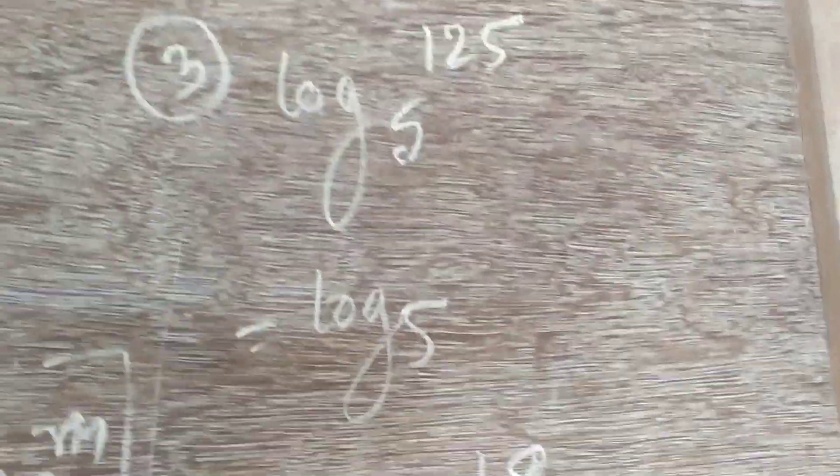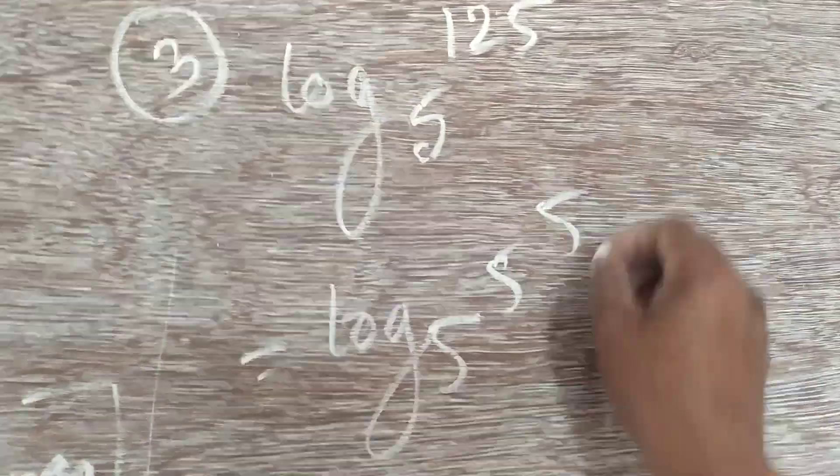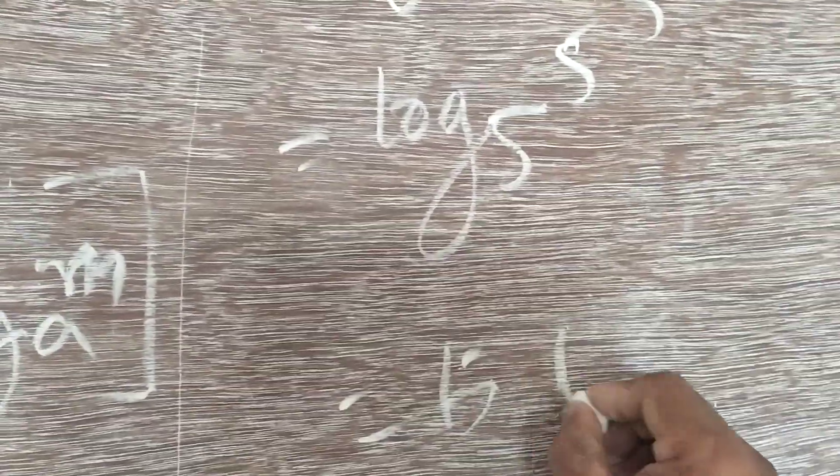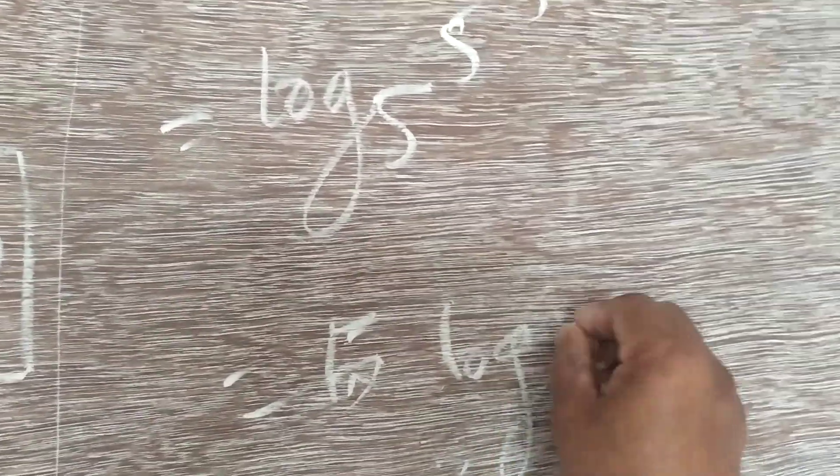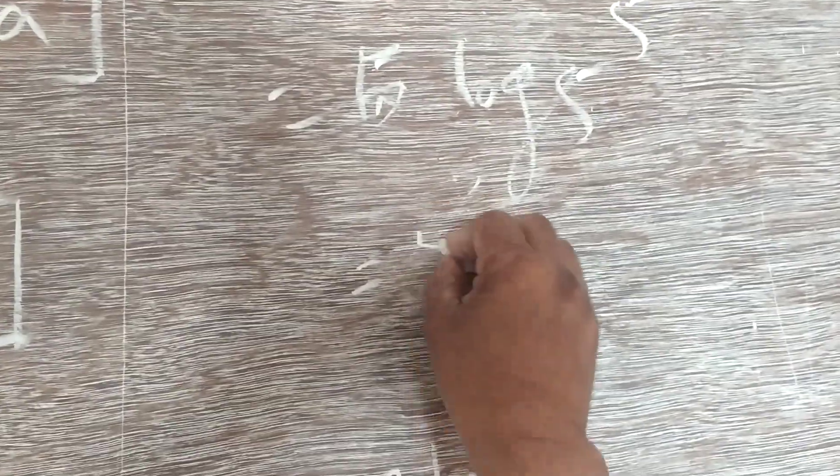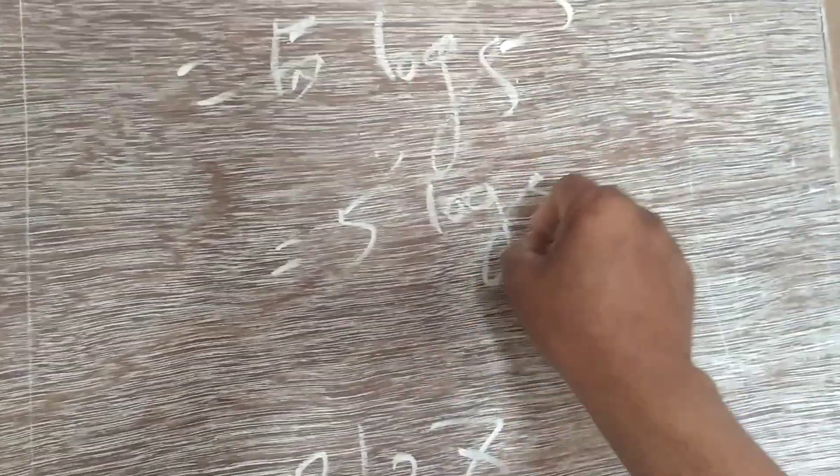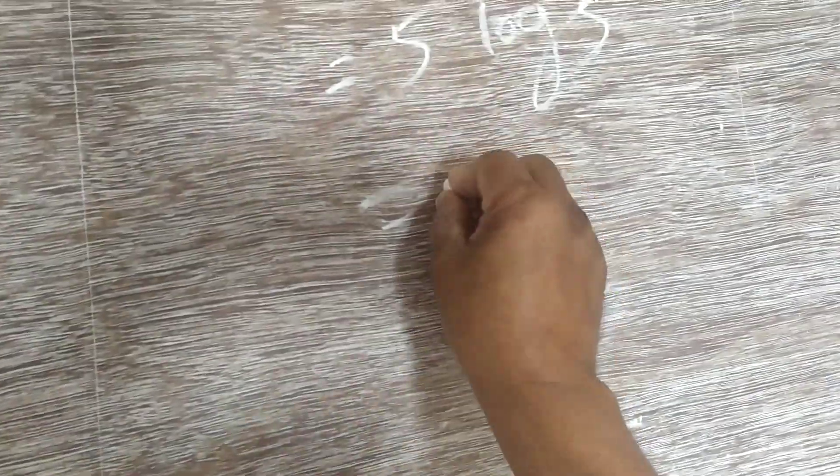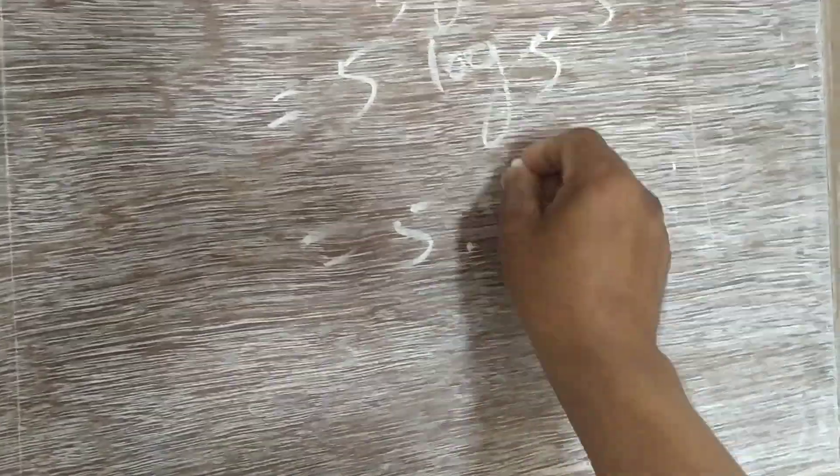Basically 5 power 5, so log 5 power 5 is equal to 5, the answer.